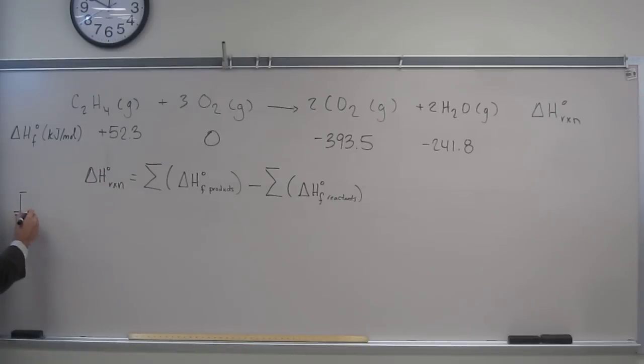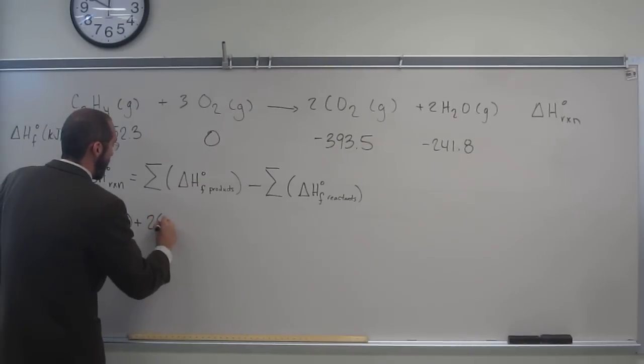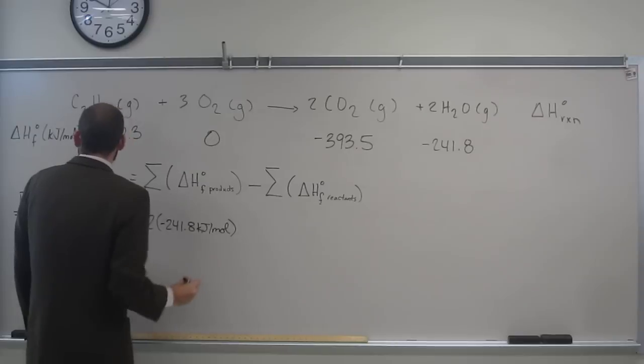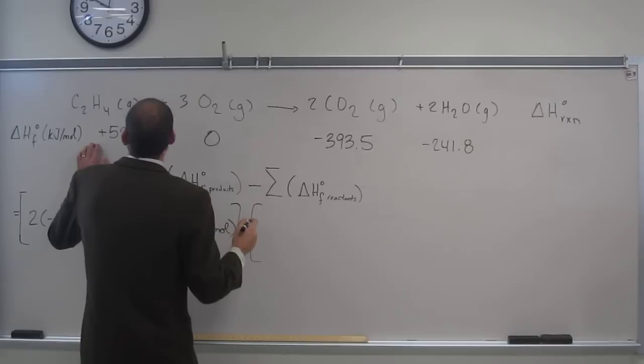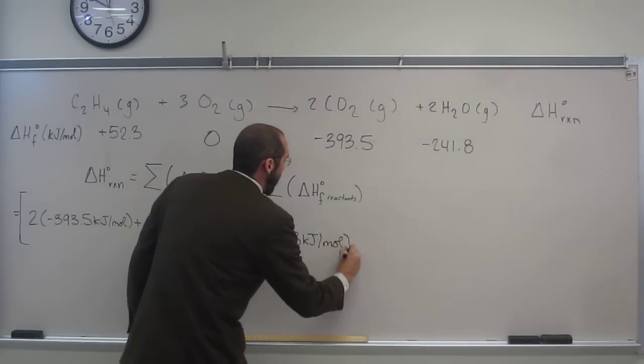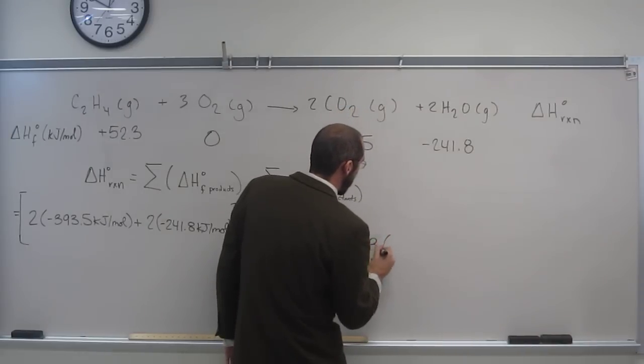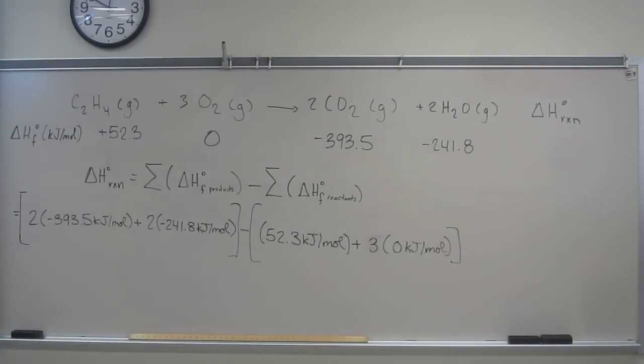So what do we have here? The products are, we've got to multiply by the coefficient. So it's going to be 2 times negative 393.5 kilojoules per mole, plus 2 times negative 241.8 kilojoules per mole, minus 1 times 52.3 kilojoules per mole, plus 3 times 0 kilojoules per mole. Everybody okay with that equation?